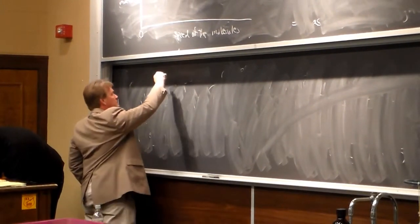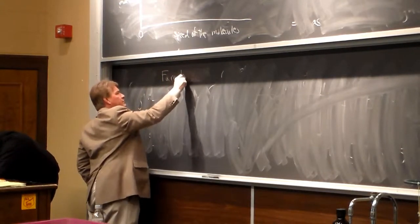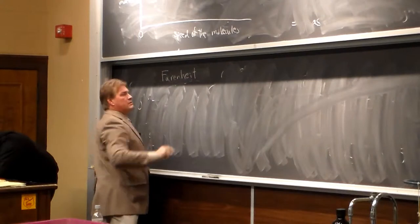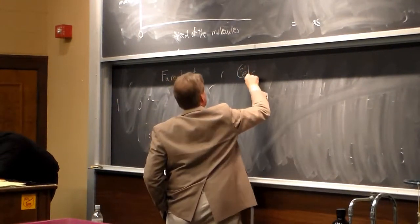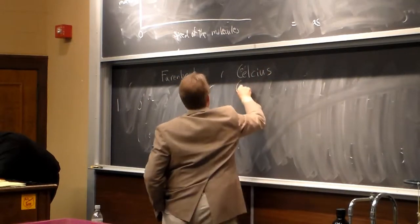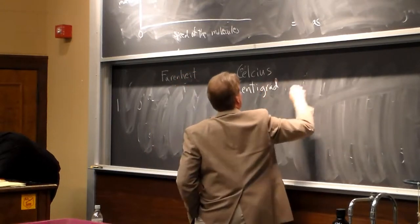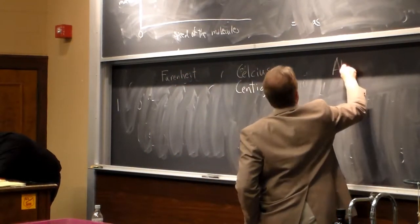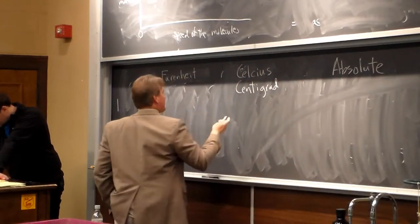So we've got three temperature scales. We're going to have Fahrenheit, the thing near and dear to your heart if you were born here in America. We have Celsius, otherwise known as centigrade, and we have absolute.